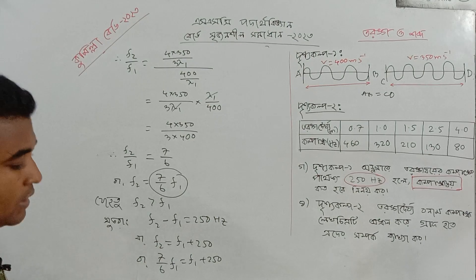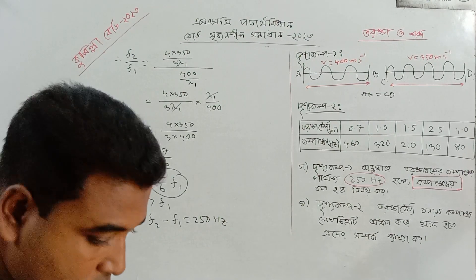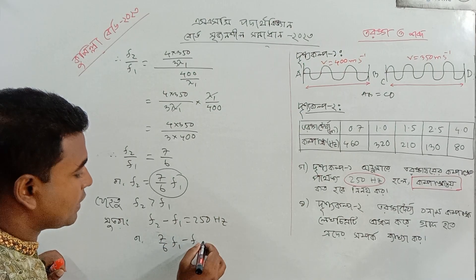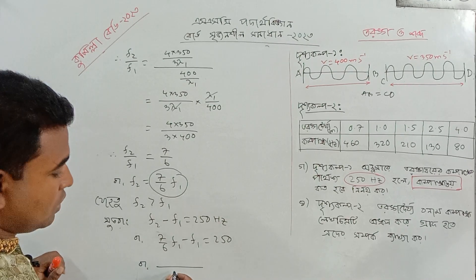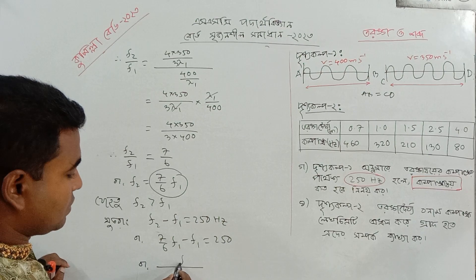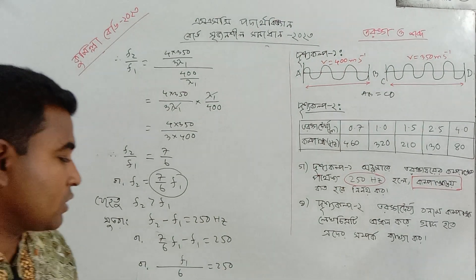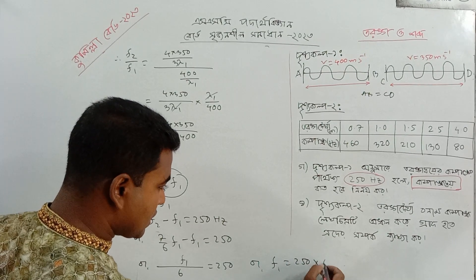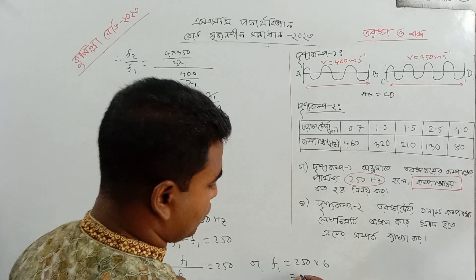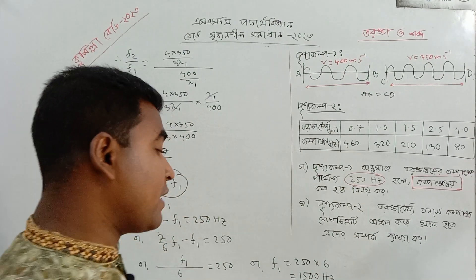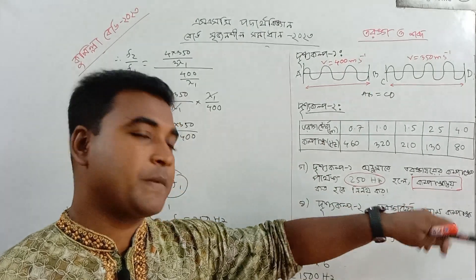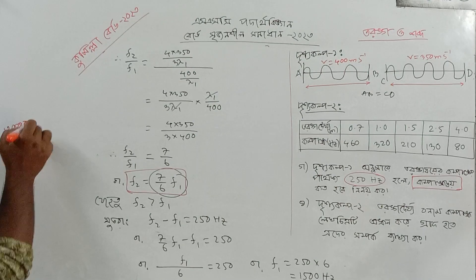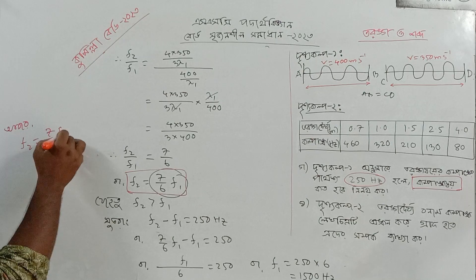I am going to write a dictionary. I am going to calculate the course thing. F2 — what is it? 7 by 6. F1 minus F1 is equal to this one. And F1 is equal to 6. If F1 is equal to 255, then F1 is equal to 255 into 6. Now R F is equal to 7 by 6, F1.